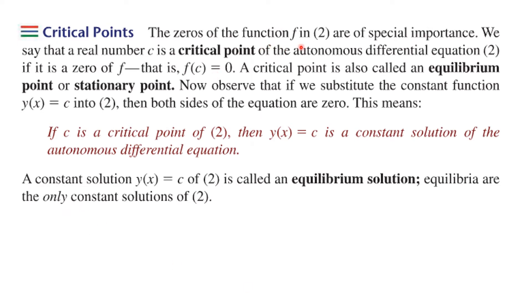Now the zeros of the right hand side function are of special importance. Sometimes they're called critical points when f of c equals zero. Other times they're called equilibrium or stationary points. But if c is a critical point, then y equals c is a constant solution of autonomous differential equations. I talked about these early on in the course as being lost solutions or singular solutions in some instances. A constant solution y of x equals c is called an equilibrium solution and equilibria are the only constant solutions of an autonomous differential equation.